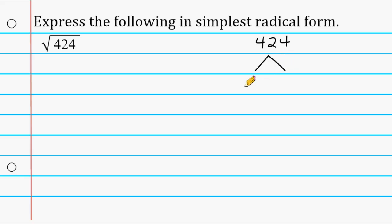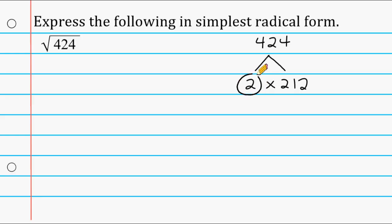Remember, a prime number is a number with exactly two factors, which are only one and itself. So let's start by multiplying 2 by 212. As soon as you get a factor that is a prime number, I like to go ahead and circle that number just to know that we're finished with it. We cannot break that down any further because it is prime.